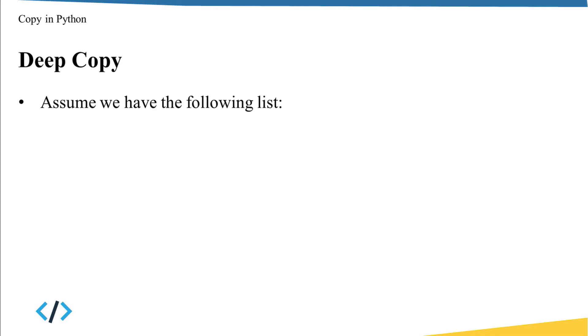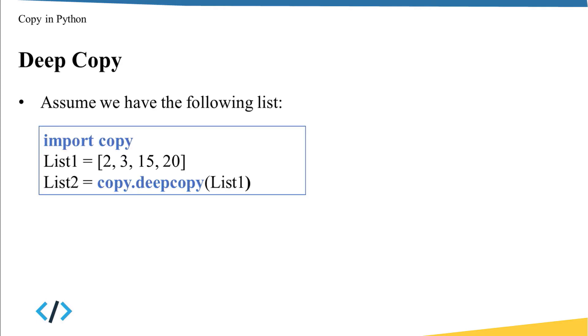To answer this question, deep copy comes to the scene. To create a deep copy, let me show you how. First, assume that I have list1 equal to 2, 3, 15, 20. If I just say list2 equal to list1, I am creating a shallow copy. However, in order to create a deep copy, you have to import a module named copy. And from this module, there is a function named deepcopy, and this function will help me create a deep copy from the variable.